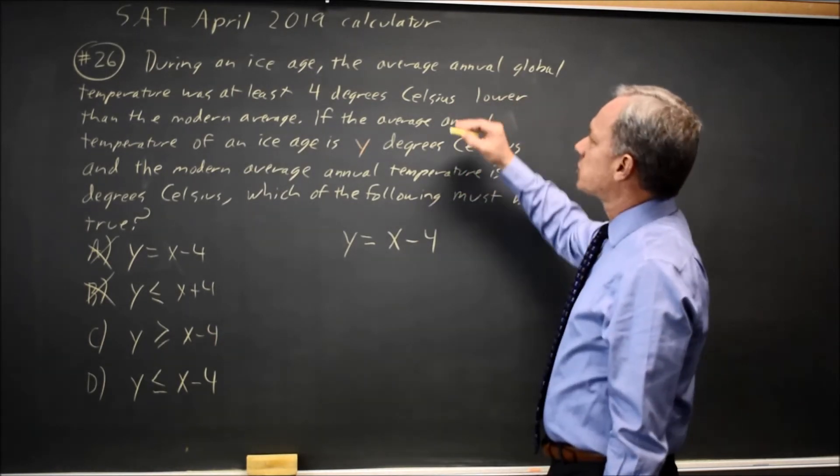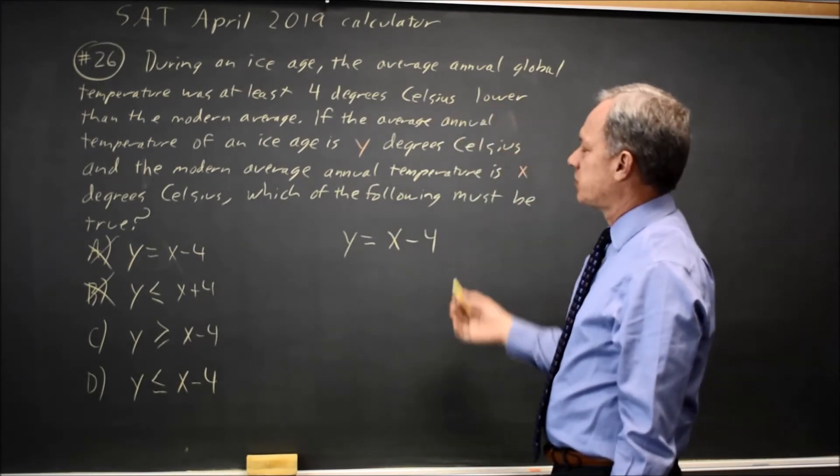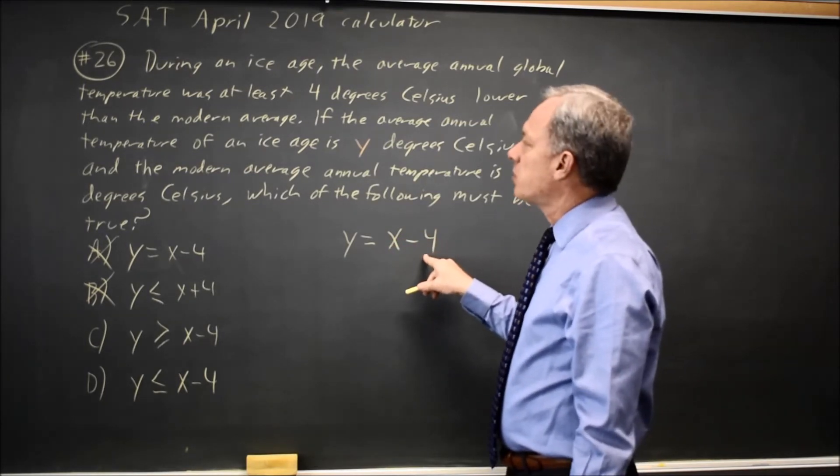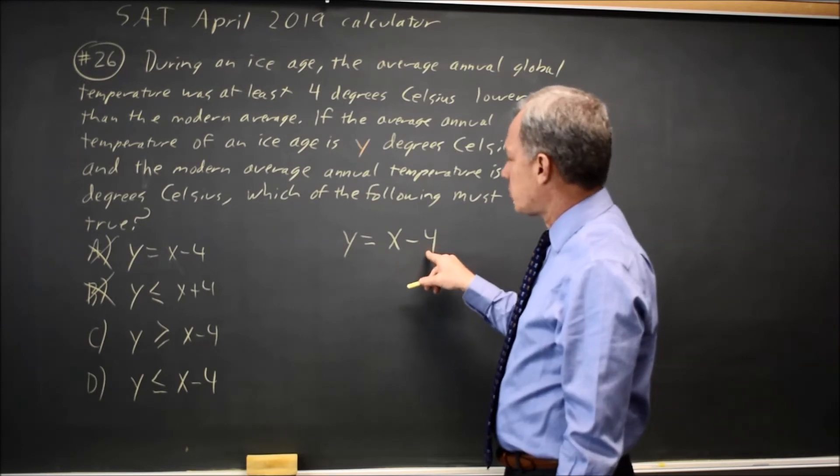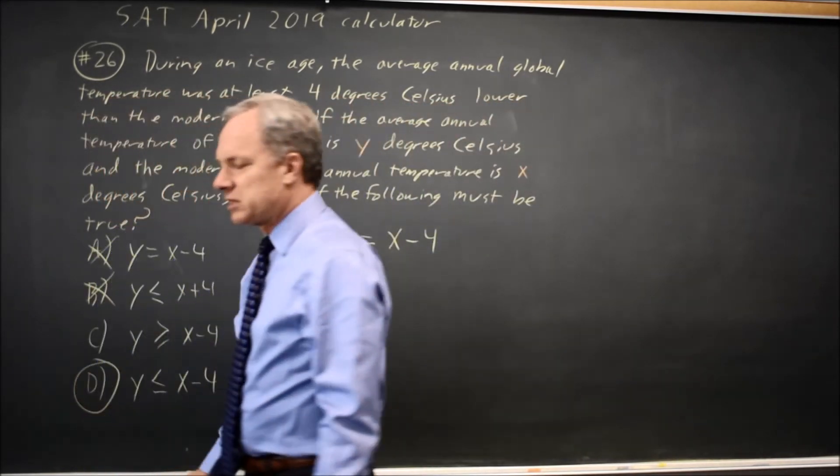And when they say that average global temperature was at least 4 degrees Celsius lower than the modern average, if you want to be that temperature or further below, it would be Y less than or equal to. So that is choice D.